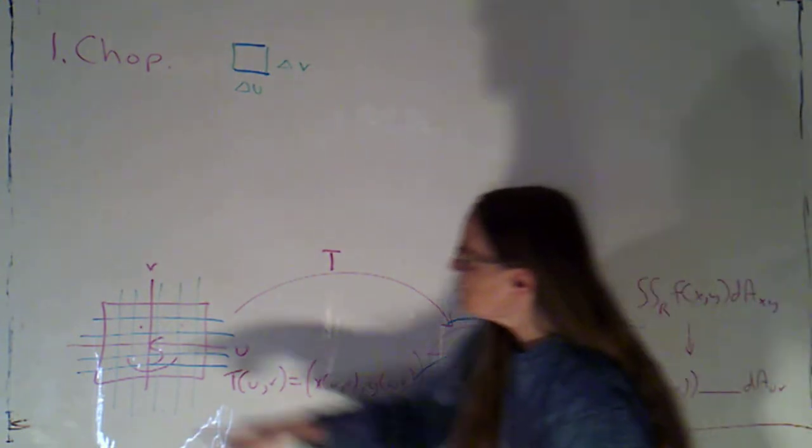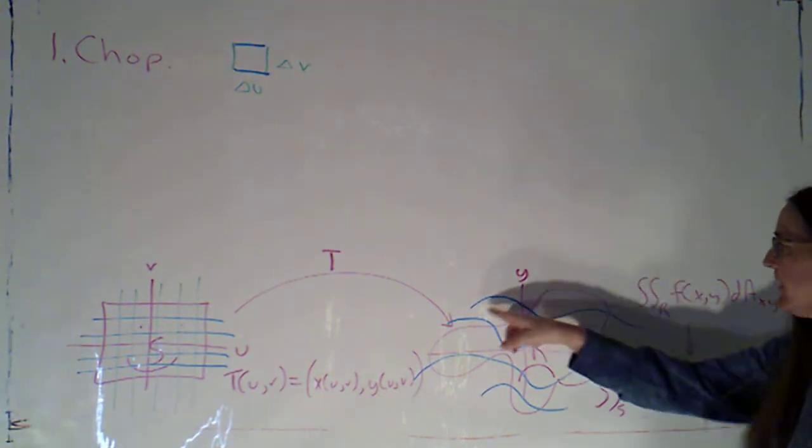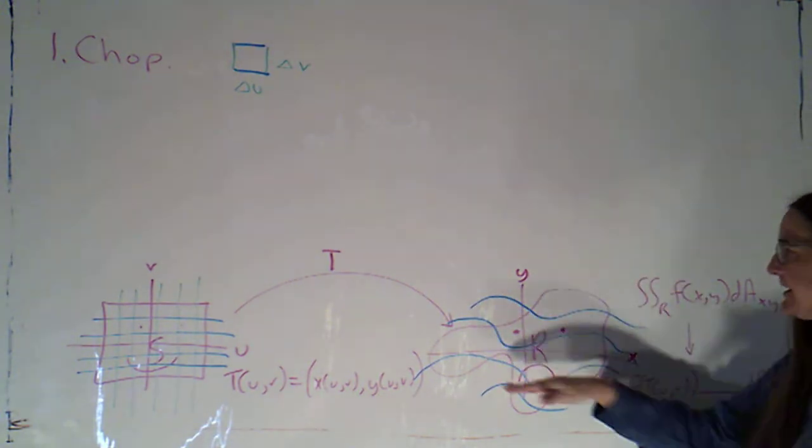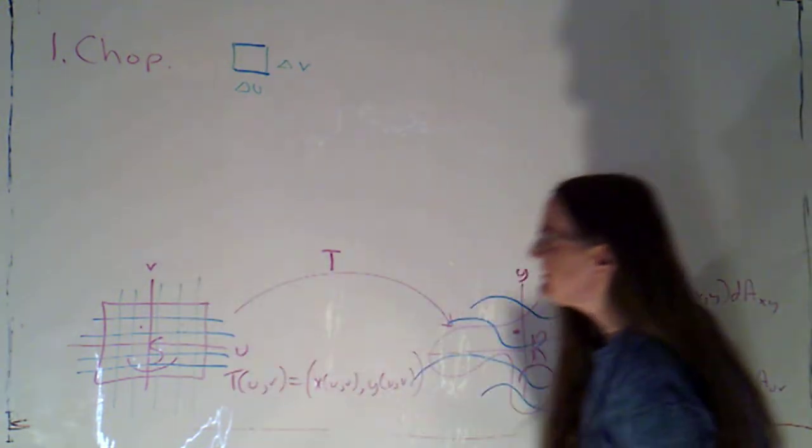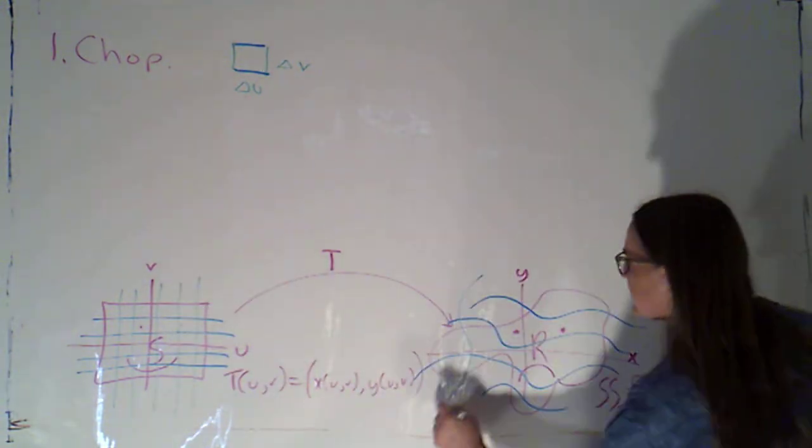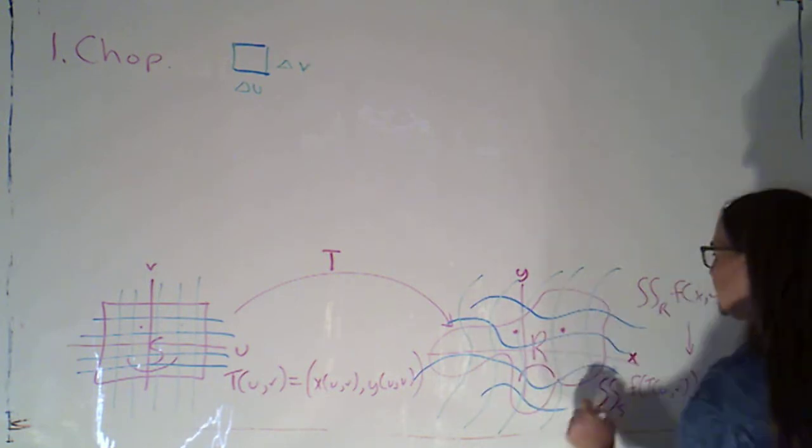And I'm using different colored lines for the horizontal and vertical lines because I'm going to keep track of that. Chopping up S is going to induce a chopping of R. Essentially, each of these horizontal lines, T is going to send that to some curve that's going to chop R into little strips. And each of the vertical lines, T is going to send that to some curve that's going to chop R into strips.